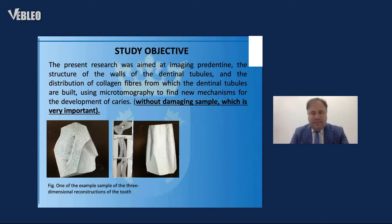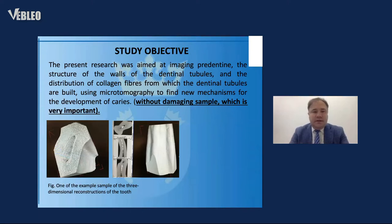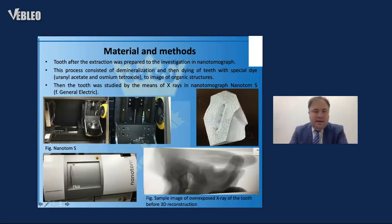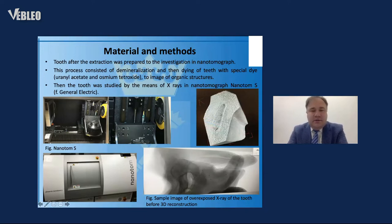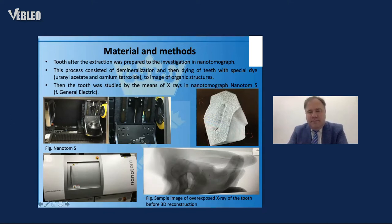My idea was to use a special contrasting technology that I developed in the lab over the years. We see here the nanotomograph with a small tooth positioned where the radiation starts, and after scanning the tooth we obtained for example 2,400 to 3,600 cross-sectional cuts — this is one of the RTG-view images produced after the scanning process.